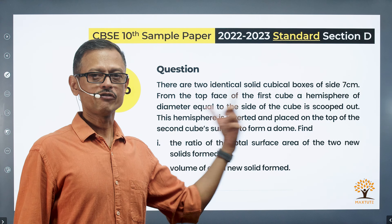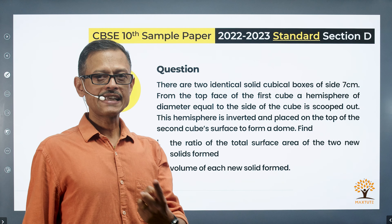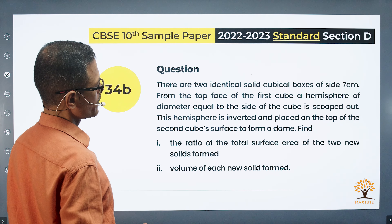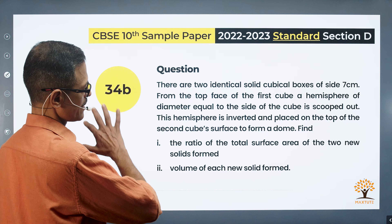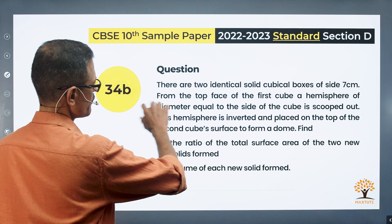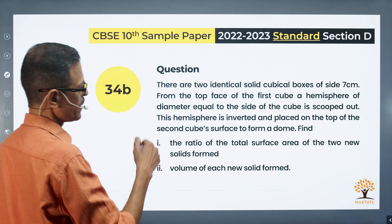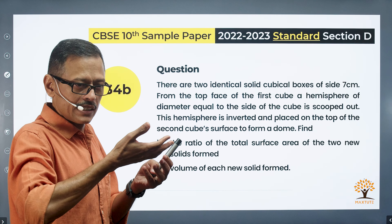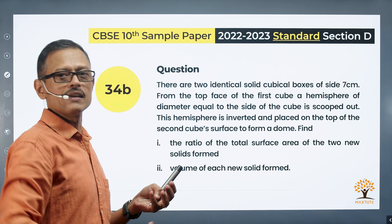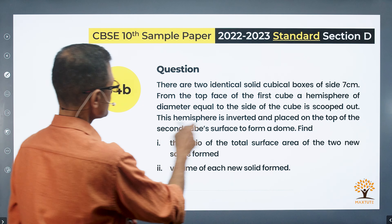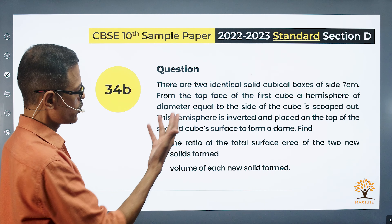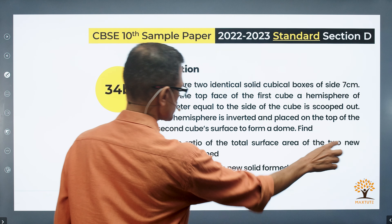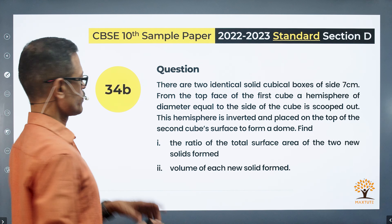This question has a second part, which is a bit tougher. There are two identical solid cubical boxes of side 7 centimeters. From the top face of the first cube, a hemisphere of diameter equal to the side of the cube is scooped out. This hemisphere is inverted and placed on top of the second cube's surface to form a dome. Find the ratio of the total surface areas of the two new solids formed.